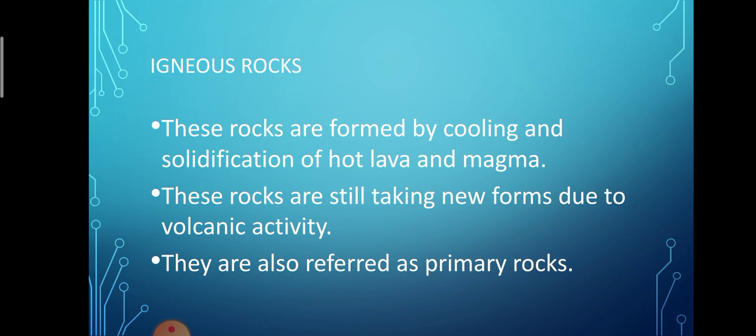The molten material or magma may cool and solidify below the earth's surface to form intrusive or plutonic rocks. As the molten material within the earth cools slowly, large crystals or coarse-grained crystalline rocks are formed. For example, granite, dolerite, etc. Igneous rocks are generally crystalline in structure as well as hard and compact.